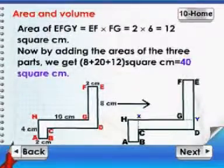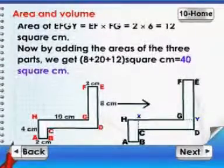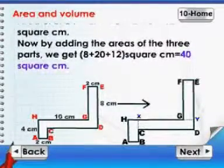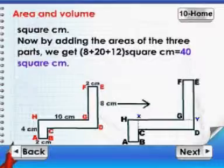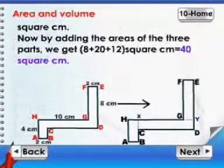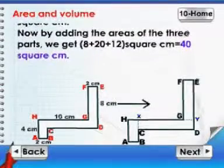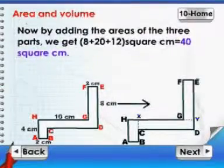Now, by adding the areas of the three parts, we get 8 plus 20 plus 12 square centimeters or 40 square centimeters.